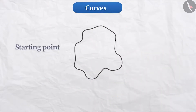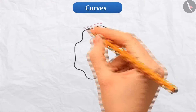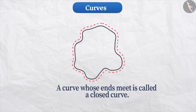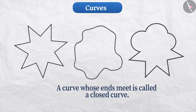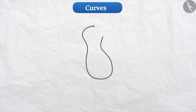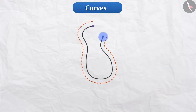Some curves start from a place and end in the same place. That means they don't have an initial point or a final point, which means their ends are joined. Such curves whose ends are joined are called closed curves, just like the curves shown here.